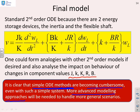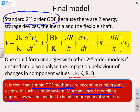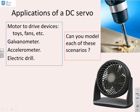We should conclude by noting the most important point: our DC servo has given us a second-order ODE. A DC servo driving a standard load with inertia and friction gives us second-order dynamics. This is important because there are a huge number of simple applications that use DC servos — many toys, fans, galvanometers, accelerometers, electric drills, etc. — and there may be cases where it's important for you to be able to model these scenarios.